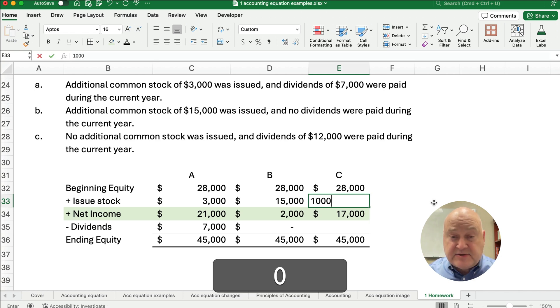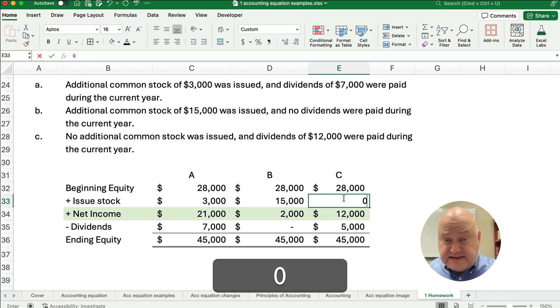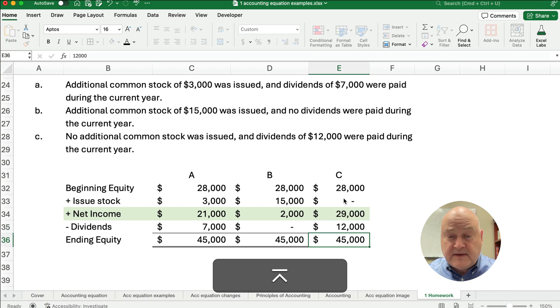If we issue additional stock, let's say 10,000, but we pay out dividends of 5,000, then that would calculate our net income. So in item C, it says no additional stock. So we're going to make that zero. And dividends of 12,000. So that means our net income must be 29,000.